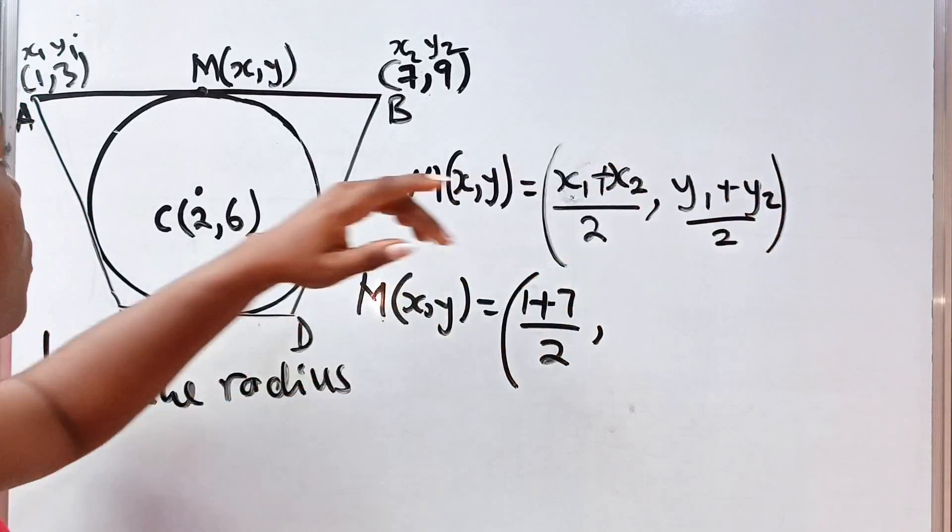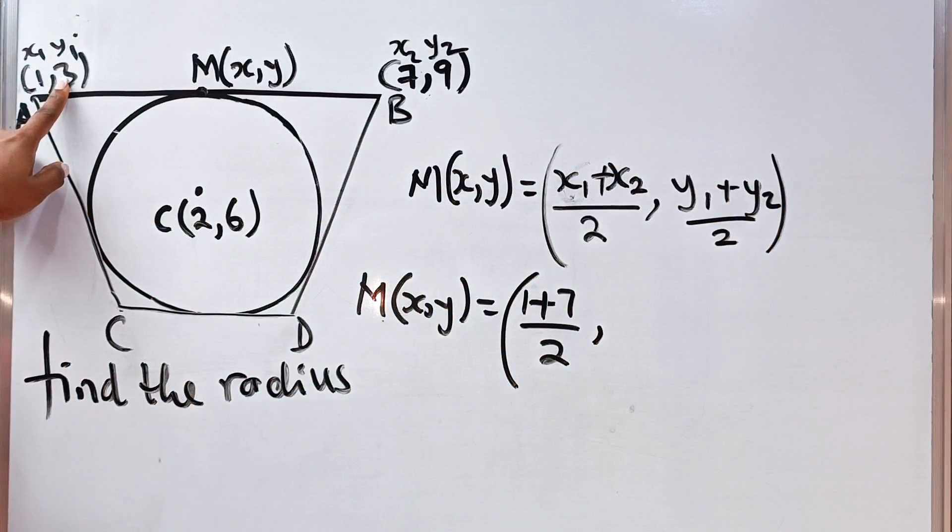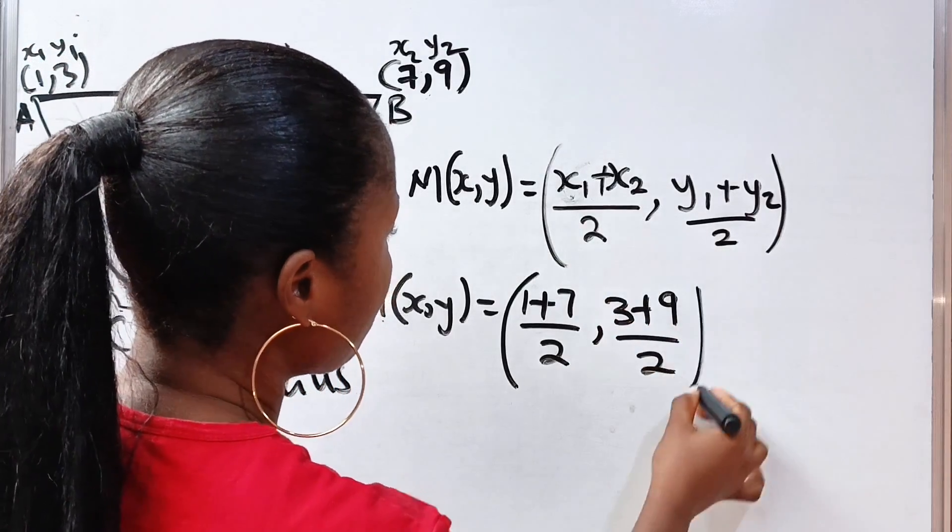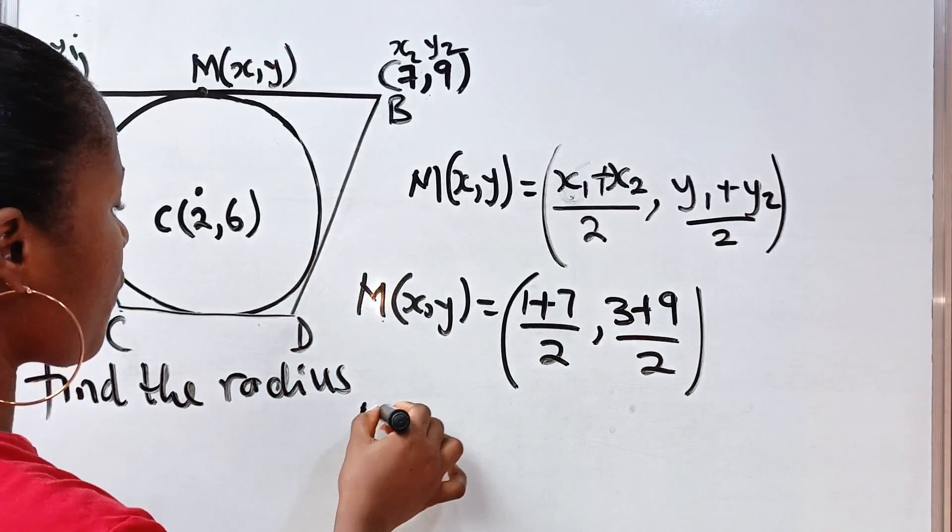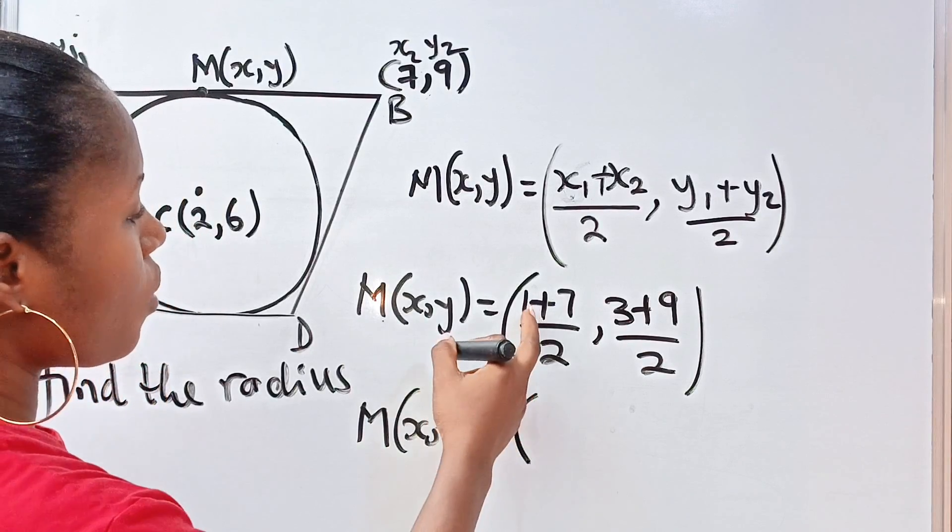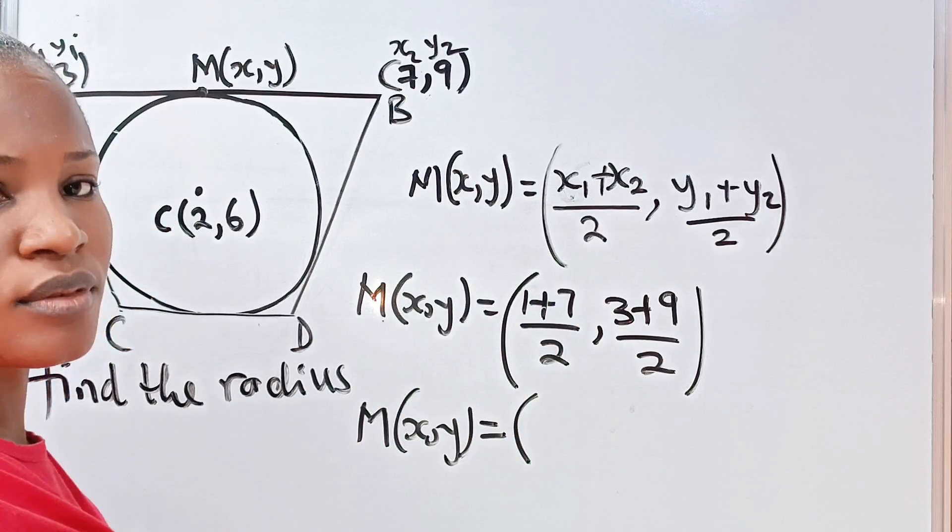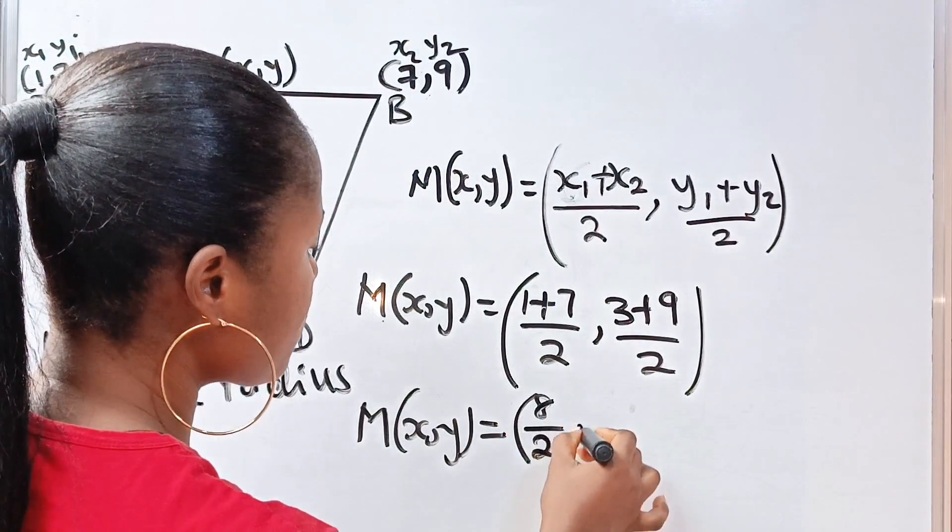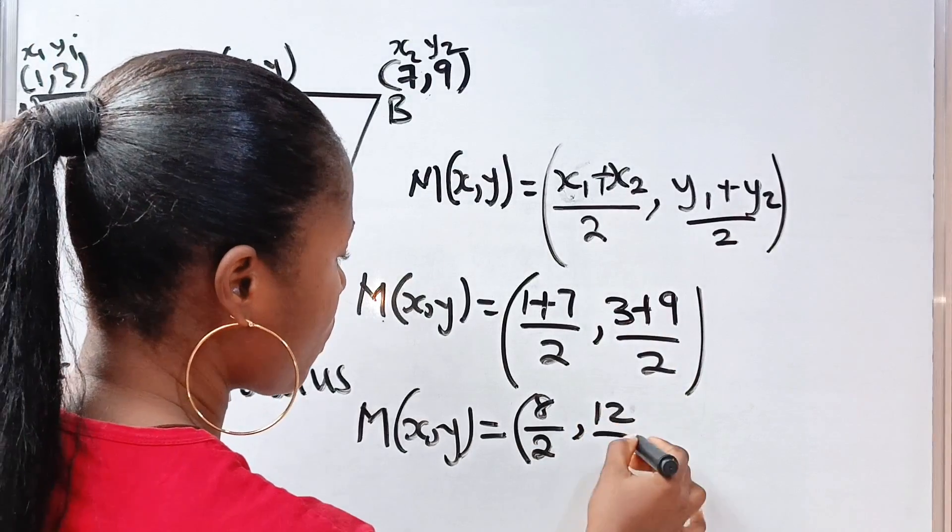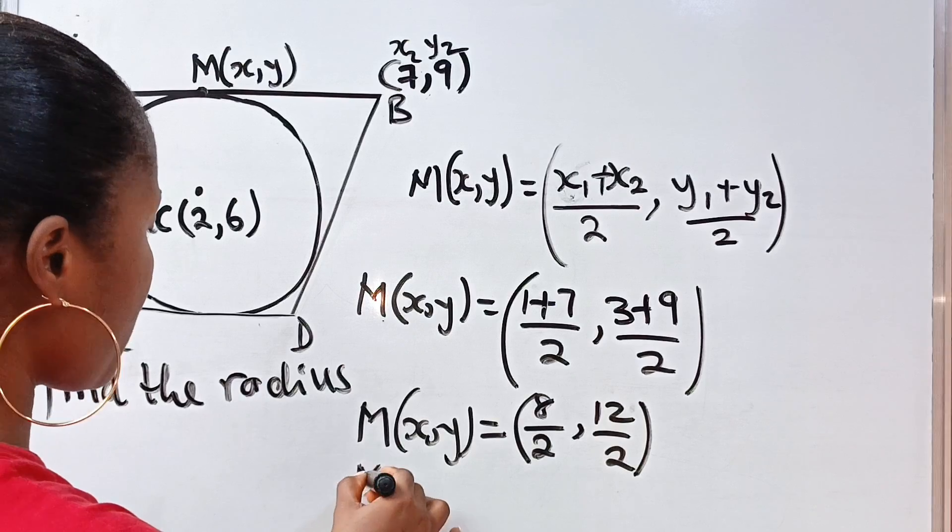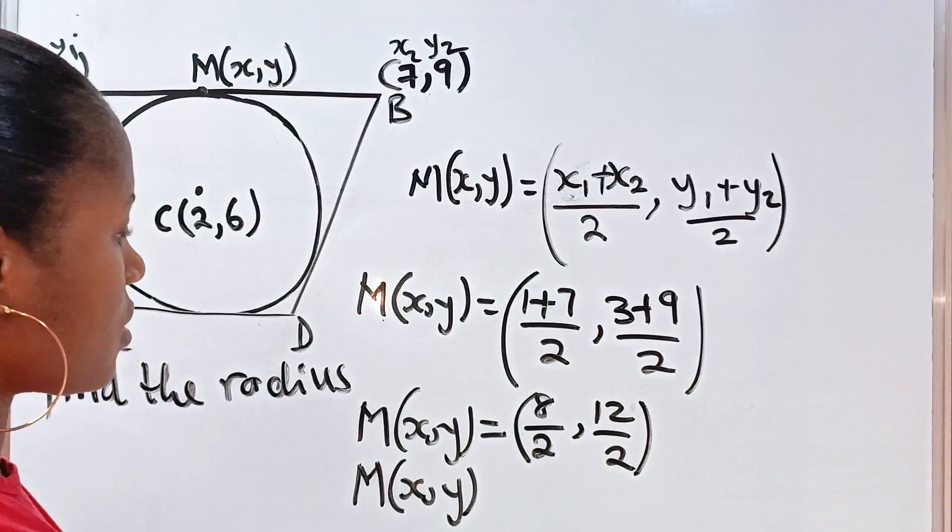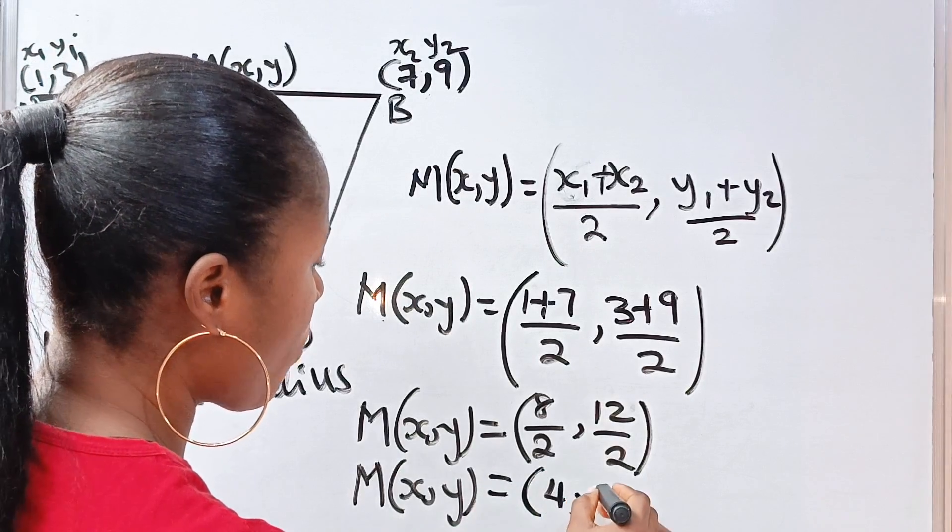Comma, then y1 plus y2, that is 3 plus 9, 3 plus 9 divided by 2. So we have M x, y is equal to 1 plus 7, which gives us 8, divided by 2. 3 plus 9 gives us 12, divided by 2. So the midpoint, the coordinates of the midpoint will be equal to 4, comma, 6.